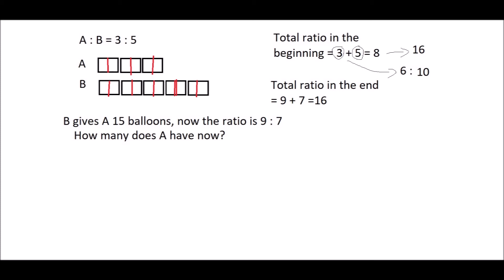Now since we are going to move some balloons from B to A, try to move it so that the ratio becomes 9 to 7. If we move these 3 units, it becomes 9 for A and 7 for B. We know that moving 3 units means moving 15 balloons, so once we find one unit we can find anything.